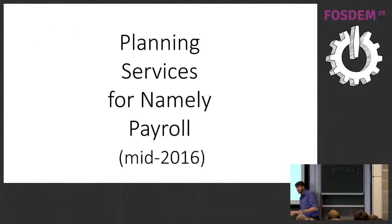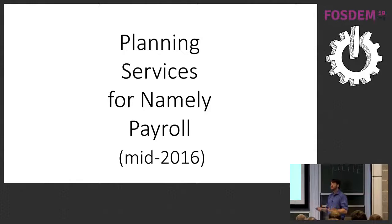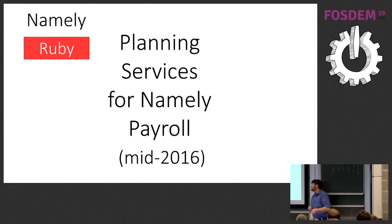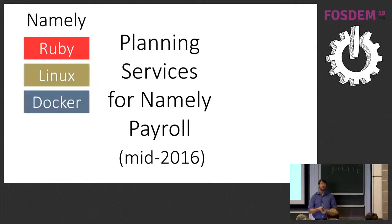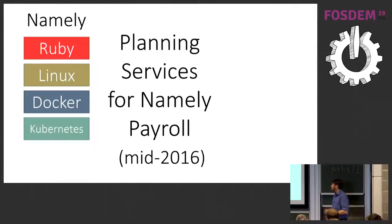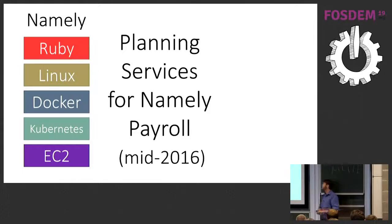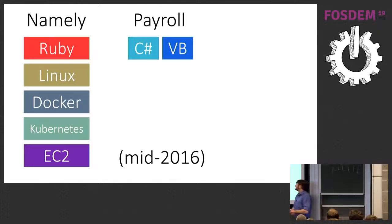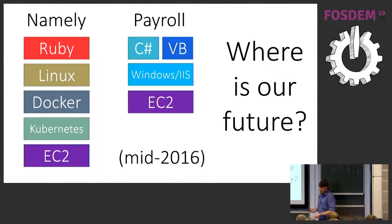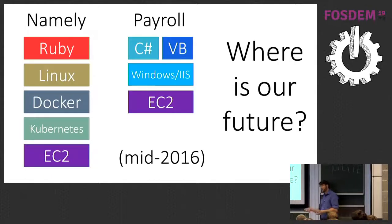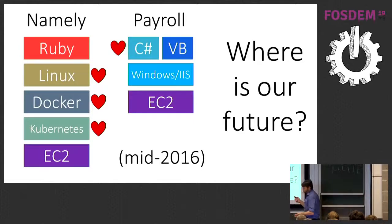In mid-2016, we decided it seemed like we have customers and a working business model. On the Namely side, we had Ruby on Rails running on Linux in Docker containers on top of Kubernetes — we were very early on with Kubernetes — on top of AWS EC2 instances. On the payroll side, we had C# and VB.NET: an ASP.NET Web Forms app running on Windows, IIS, and EC2 instances. In coordination with our SRE teams, we decided Linux, Docker, and Kubernetes were good for the payroll side too.